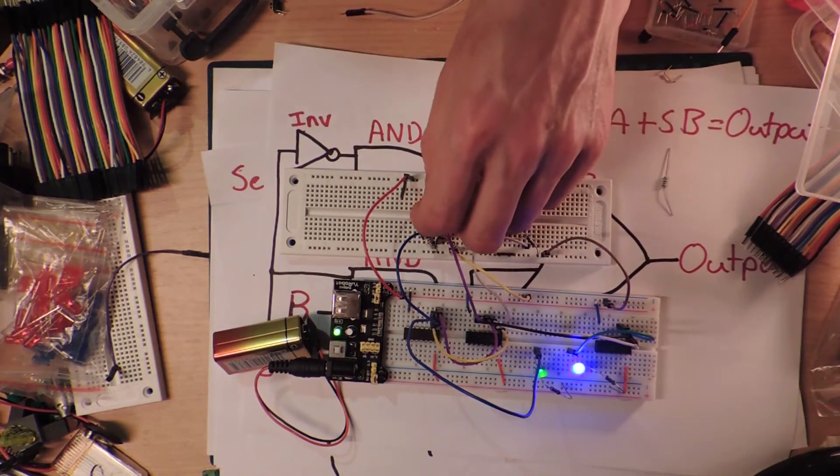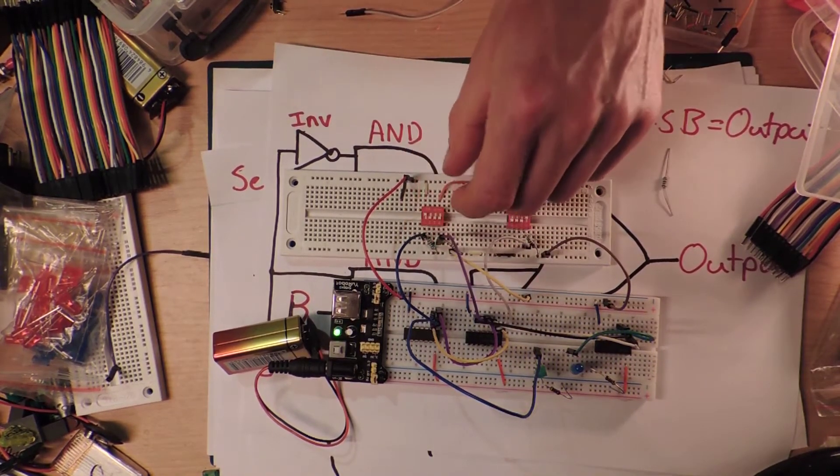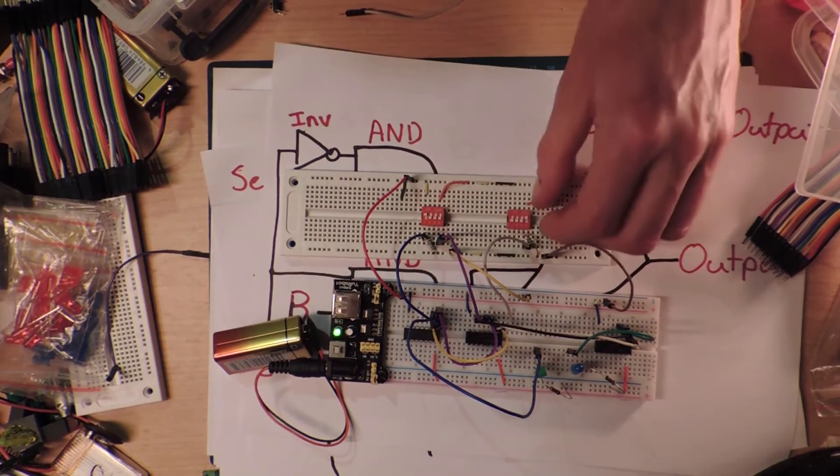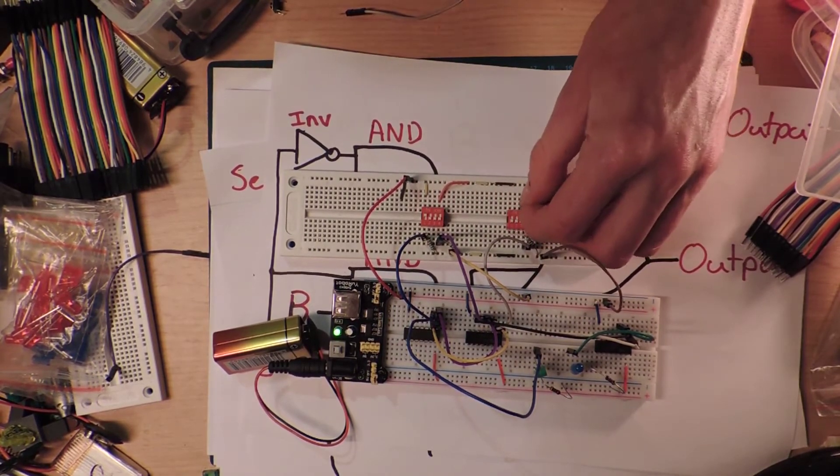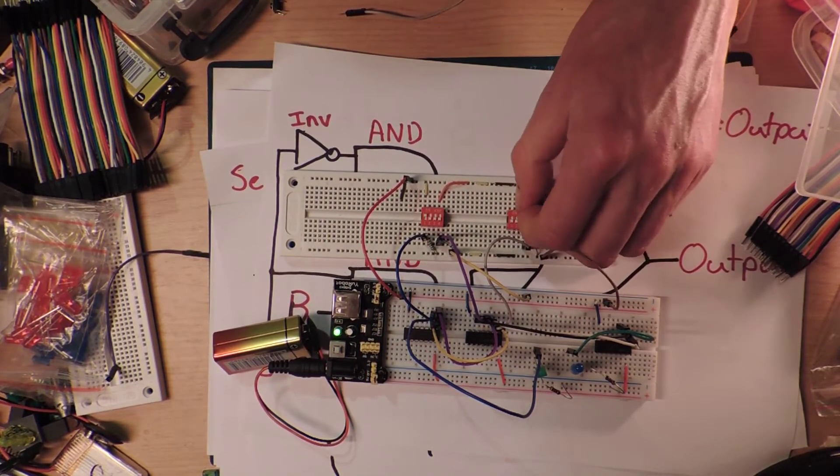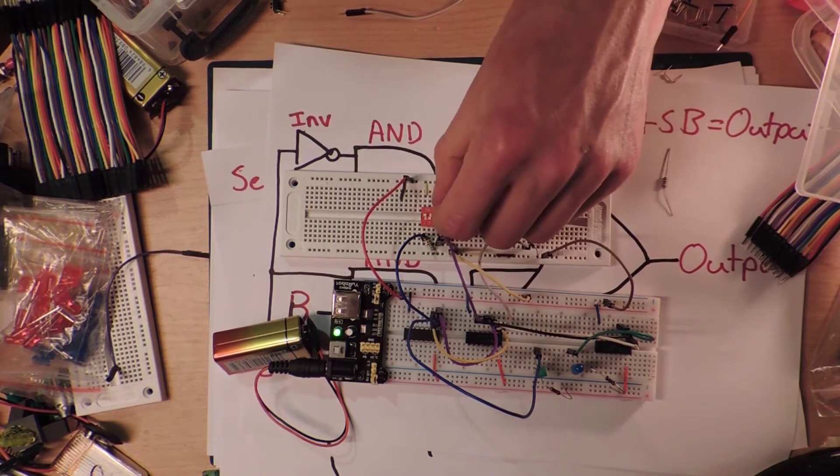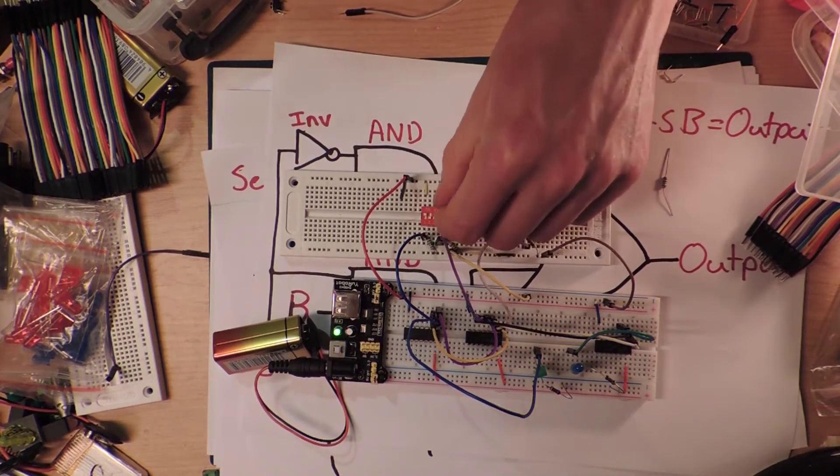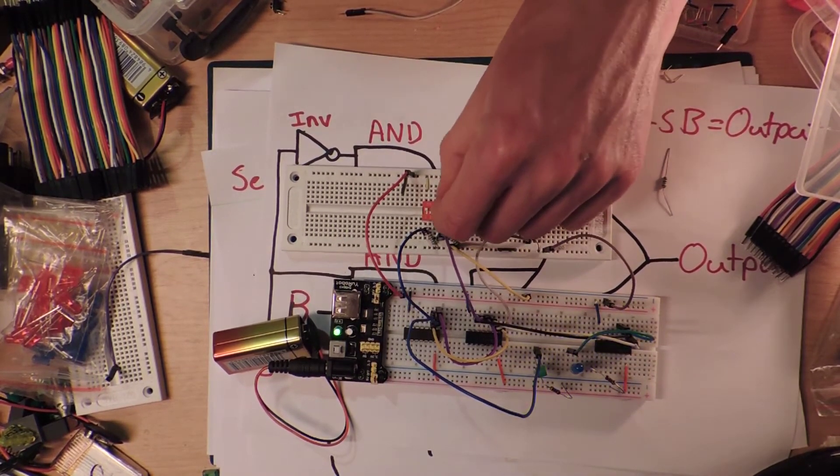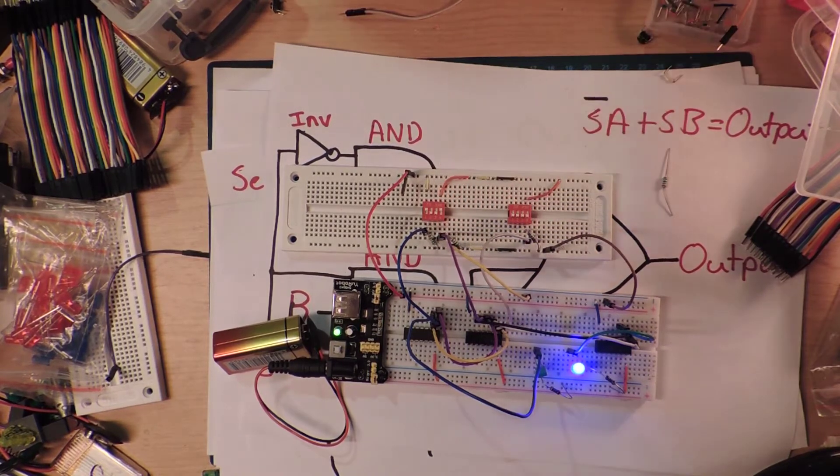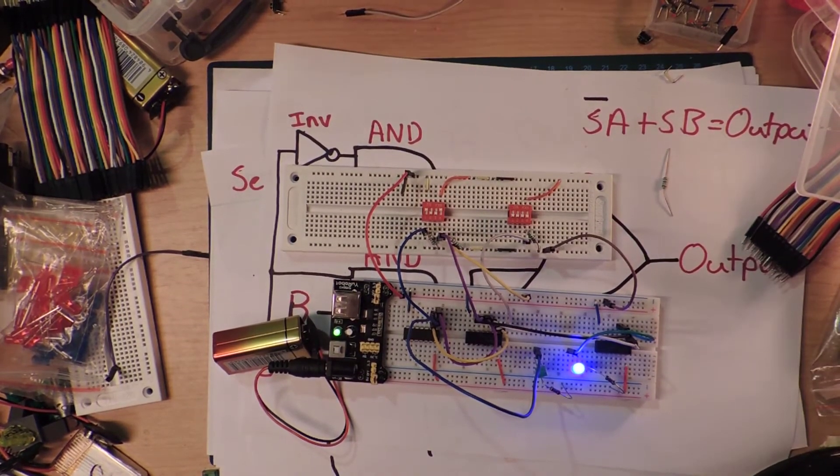So we'll do that when I turn that one high, and then we're going to turn select back to high again. So the green light goes off and now nothing changes when I flick this switch. So this is A flicking, but if I flick this switch it's doing what it's supposed to do. So that's exactly the behavior that we eventually wanted and that we eventually got.